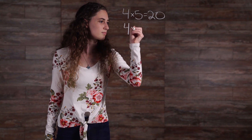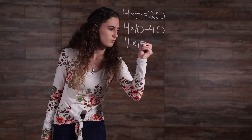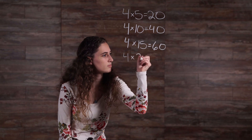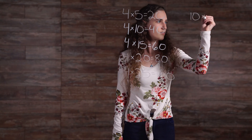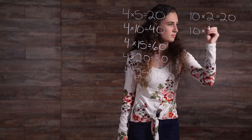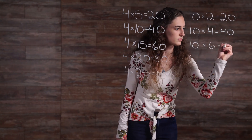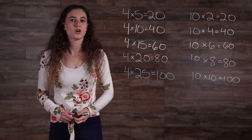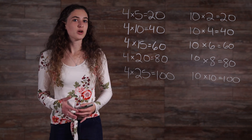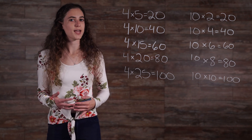When comparing numbers, sometimes they are compared by their common multiples, or multiples that the numbers have in common. Here are some common multiples of 4 and 10: 20, 40, 60, 80, and 100 are all multiples of both 4 and 10.